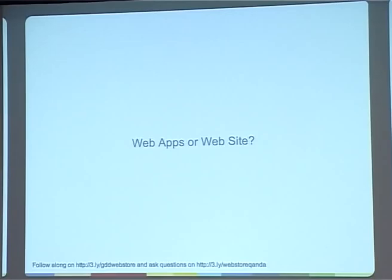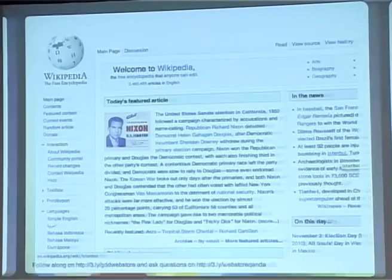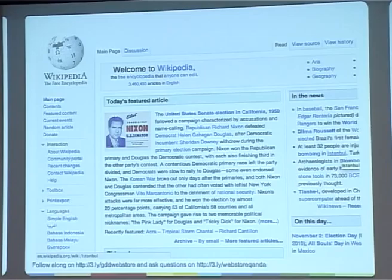I actually speak to quite a lot of people about the difference between web applications and websites, and it's really hard to quantify what a web application is and how it differs from a website. I've got a couple of examples and I'm going to test you all to see whether we get consensus. Do we think this is a web application or a website? So I definitely think Wikipedia is a website — it's content-based, you use it for exploration of information.